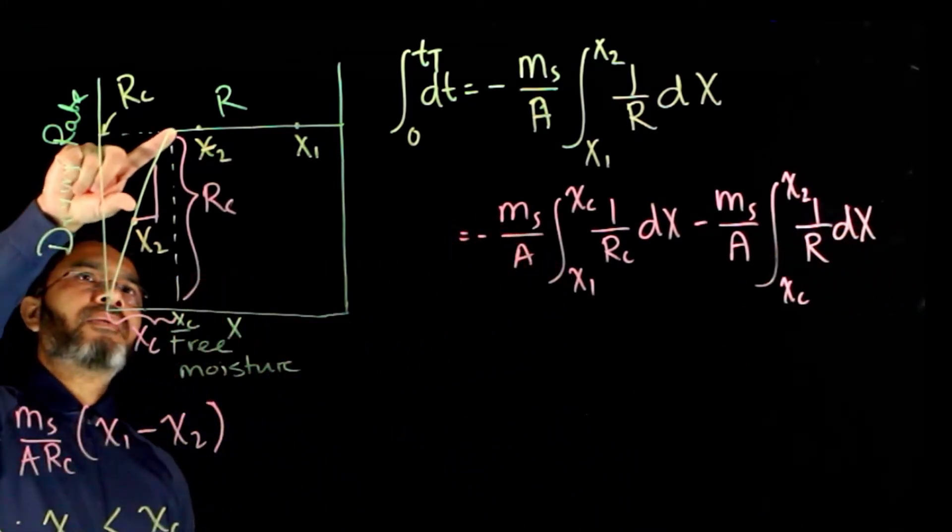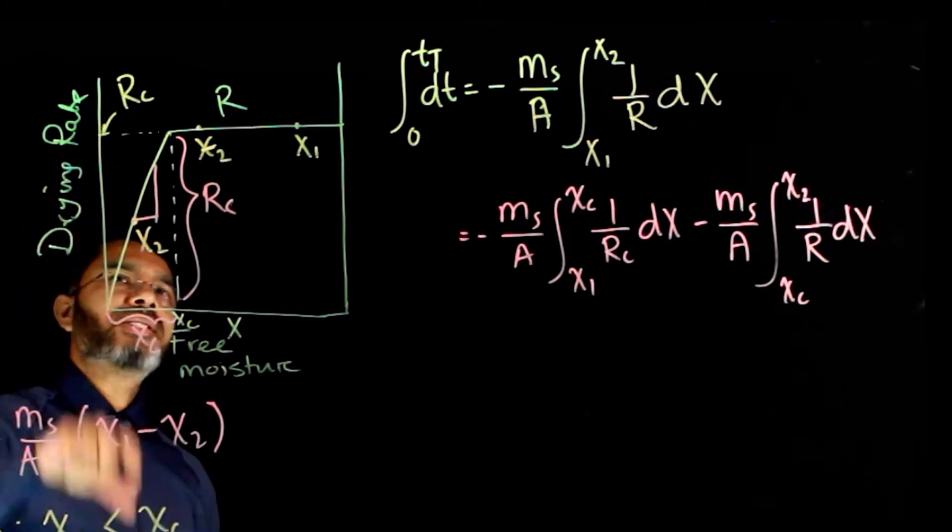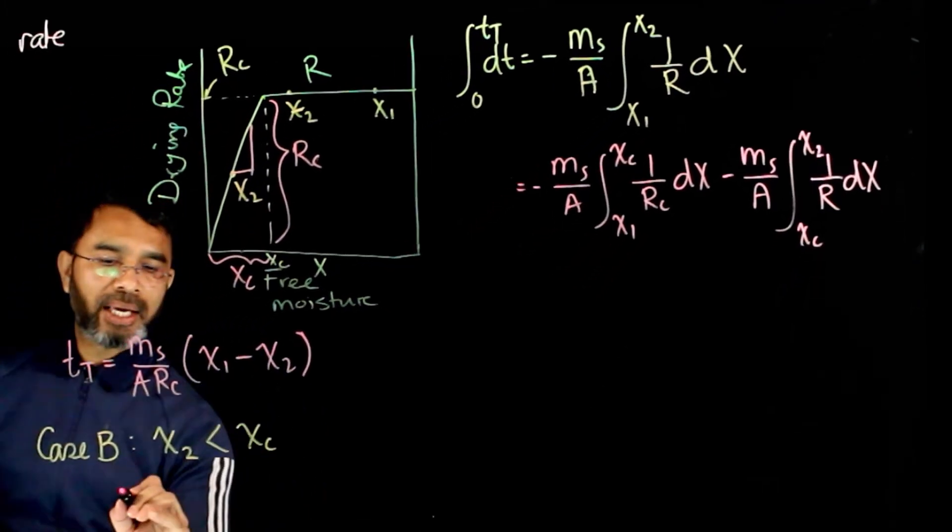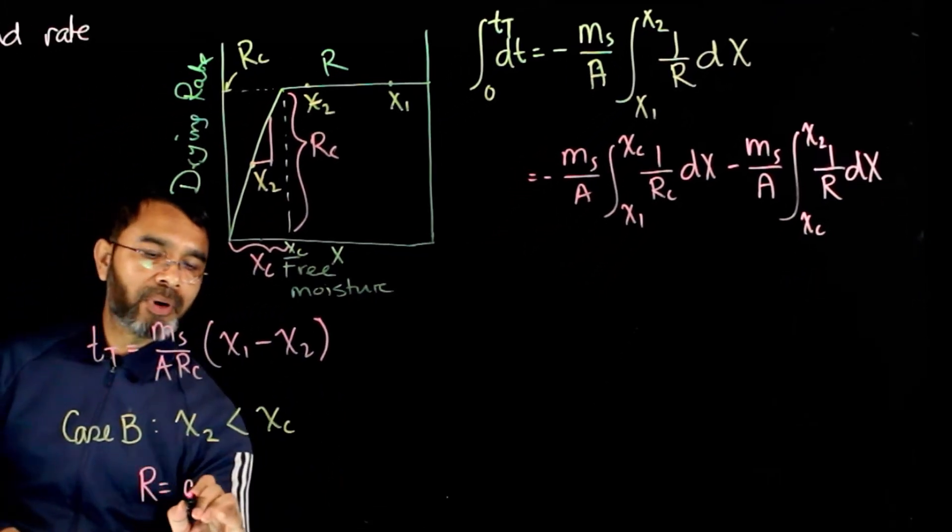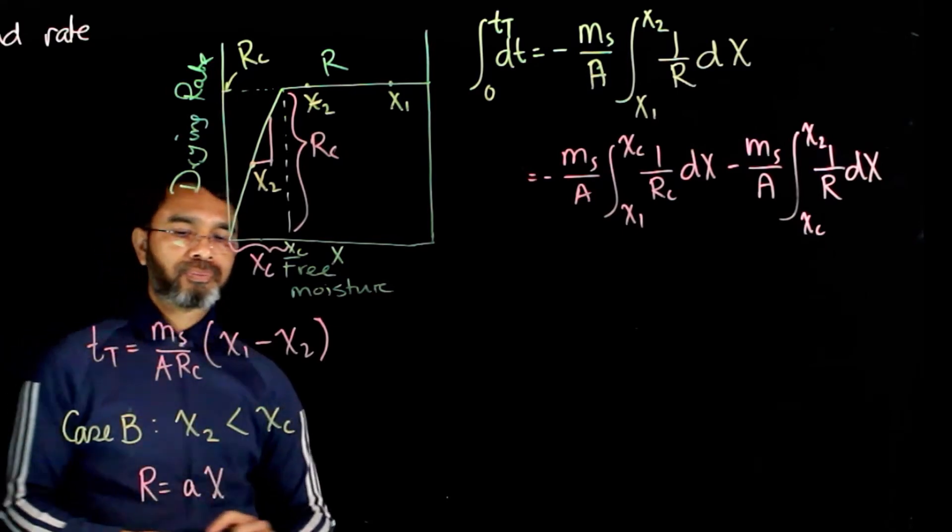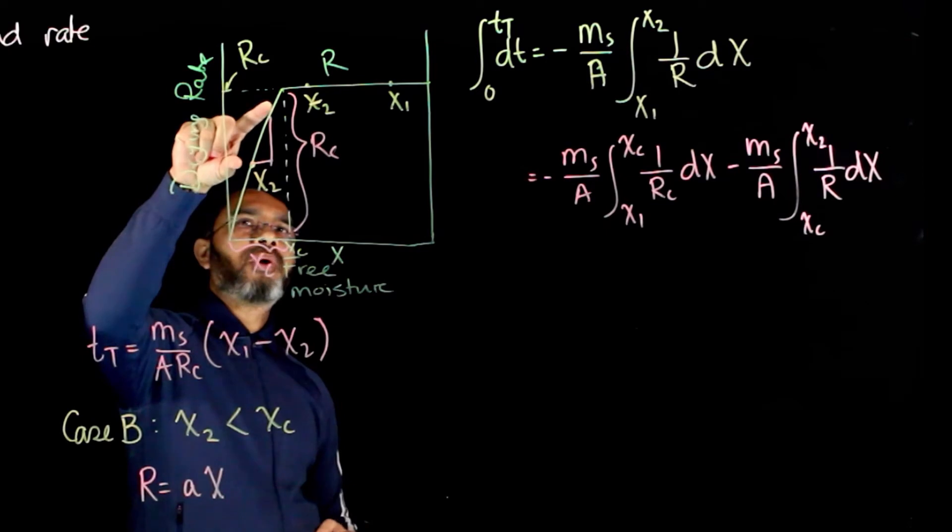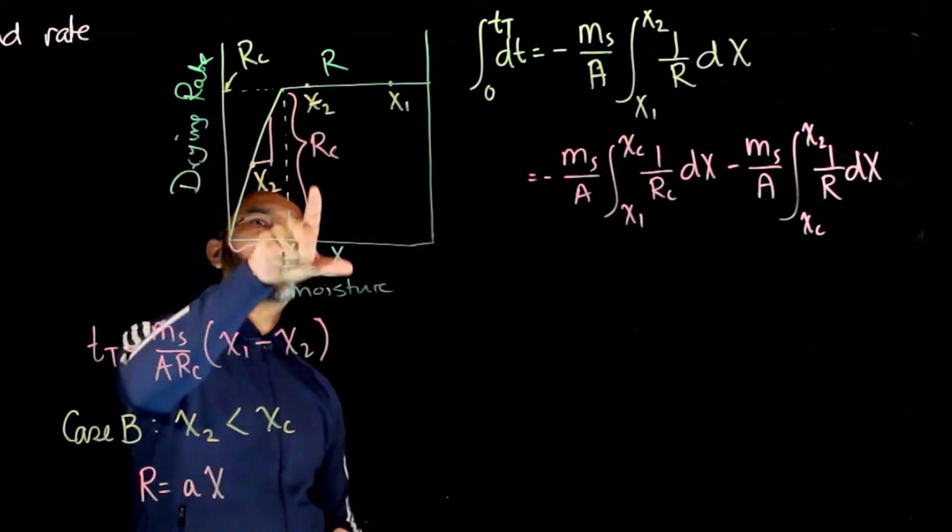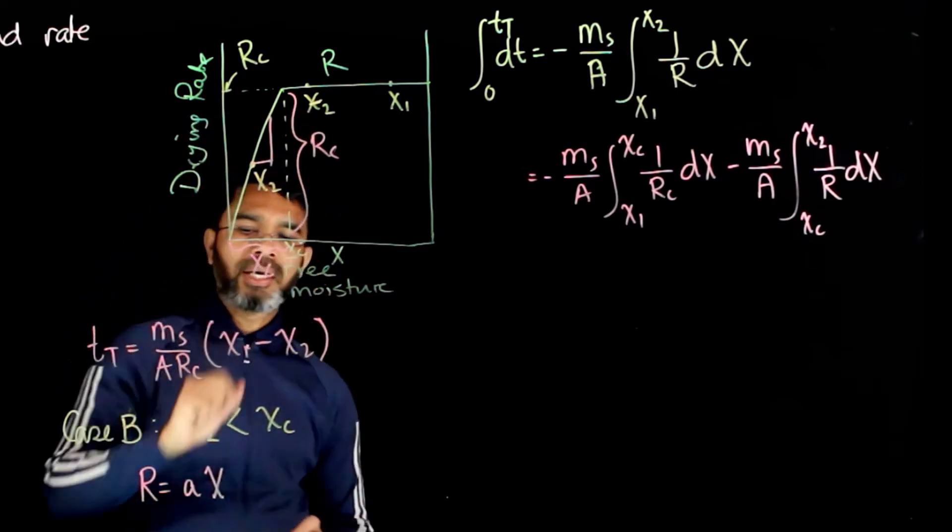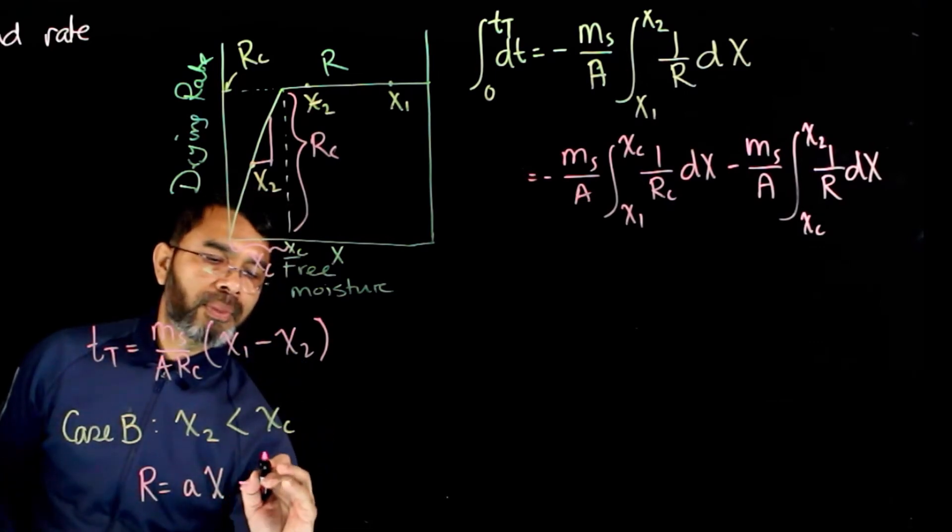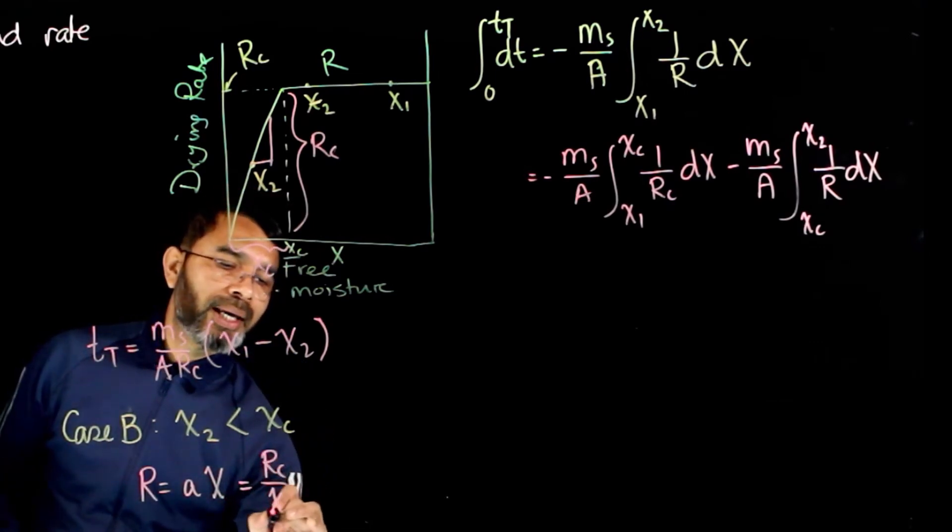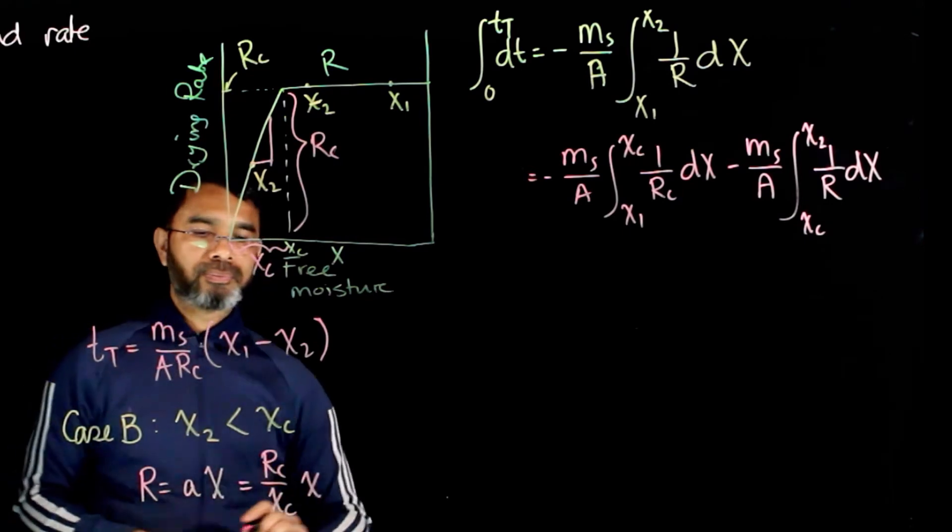Now, you see here, r between xc and x2, r is a linear function of x, meaning r equals some constant a x. Now, what is the value of this constant? This is nothing but the slope of this line, which is given by rc over xc times x.